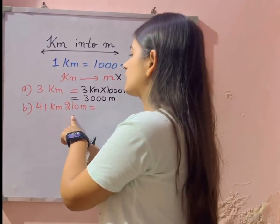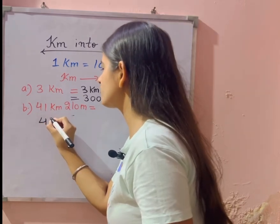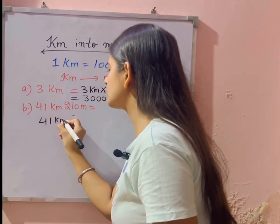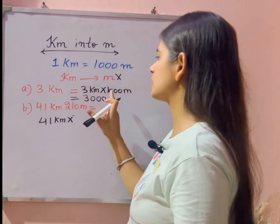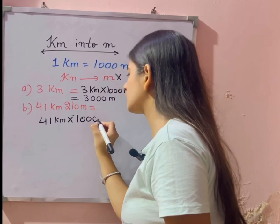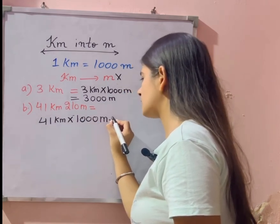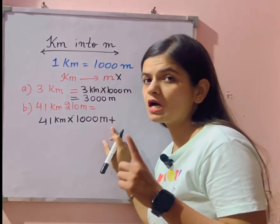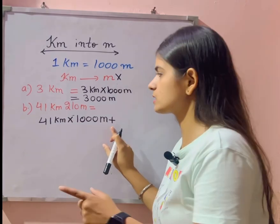Sabse pehle same concept chalega. Forty one kilometer ko meter me convert karne ke liye kya kiya? Hame yahan pe thousand se multiply kya karna hai, thousand se multiply karne ke plus. Now what we will write here? Plus.